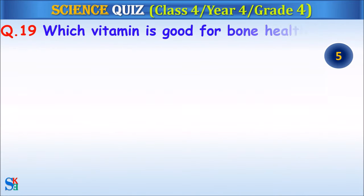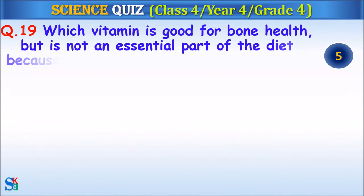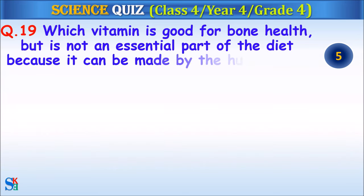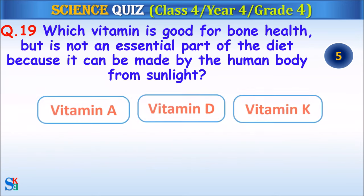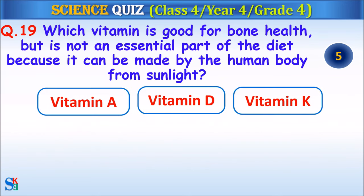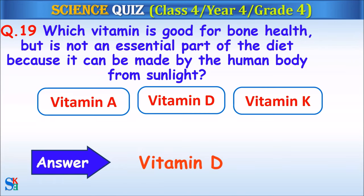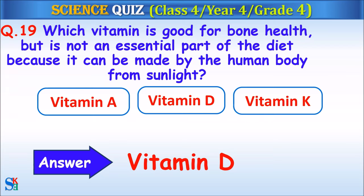Question 19: Which vitamin is good for bone health but is not an essential part of the diet because it can be made by the human body from sunlight — Vitamin A, Vitamin D or Vitamin K? Your time starts. The answer is Vitamin D.